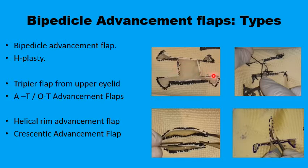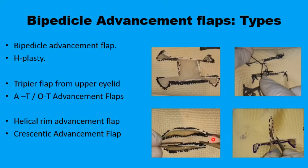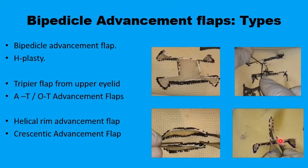The basic form of the bipedicle flap is when the two flaps are directly opposing each other, and when these flaps are mobilized and sutured the final outcome resembles an H — sometimes called an H or T. They can also come as an intact bridge of tissues with pedicles on both sides of the defect, or they can address a triangular defect using bipedicle flaps from both sides, transforming an A-shaped defect into a T-shaped closure, or an O-shaped defect into a T-shaped closure.